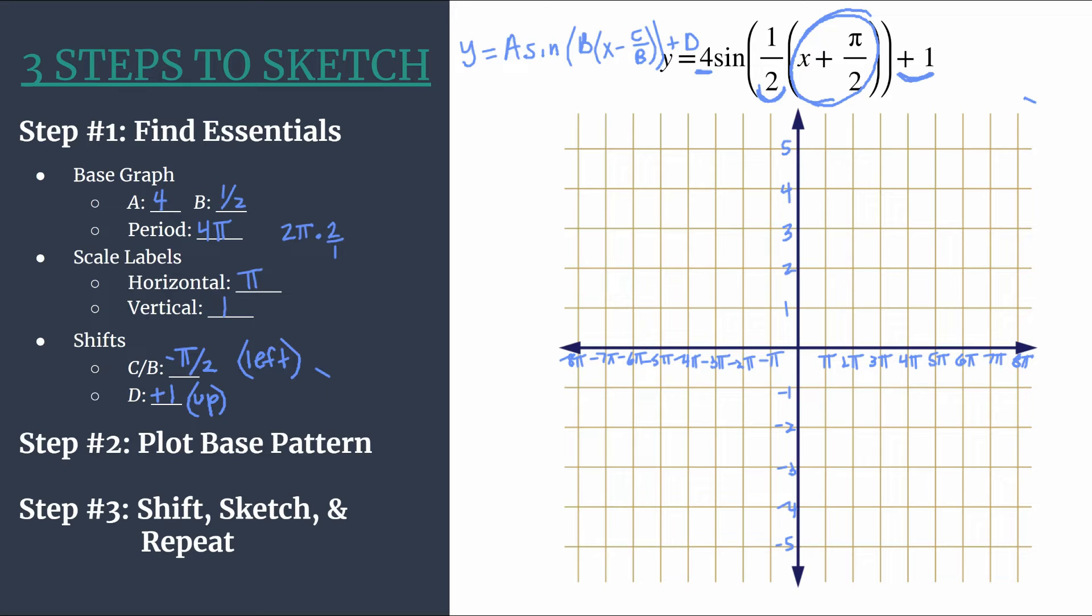The second thing is to recall our base sine pattern. And we know that there was no negative out in front of the sine. So we know that this is an unreflected sine pattern. So that pattern goes zero starting at the origin. So zero, maximum, another zero, minimum. So we're ready to jump in.